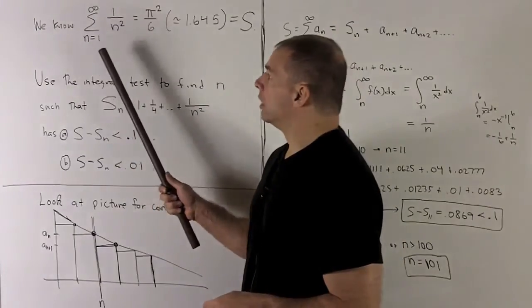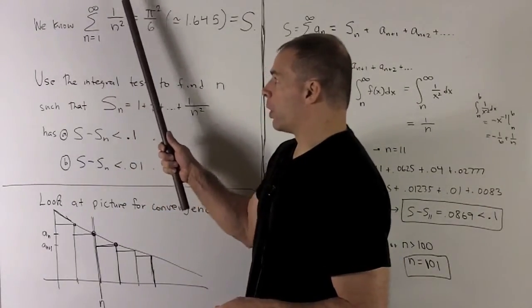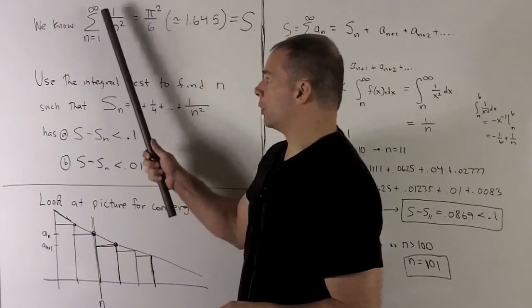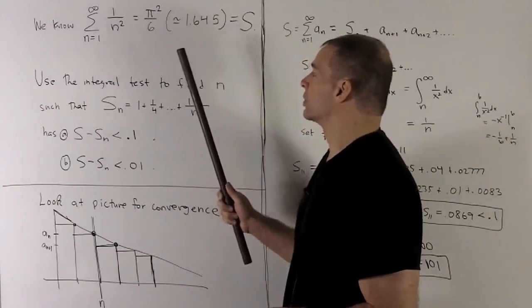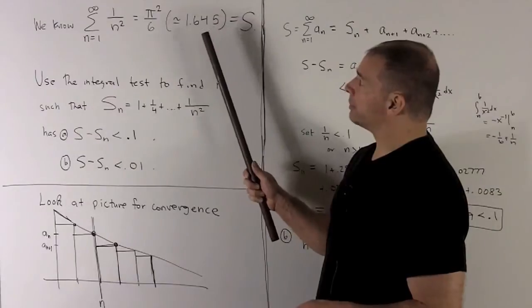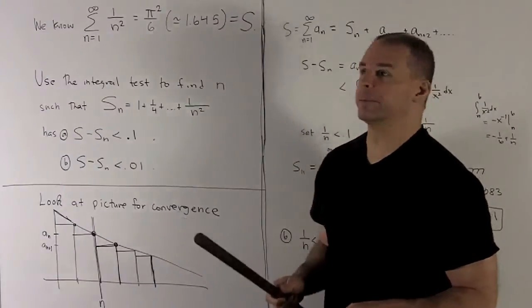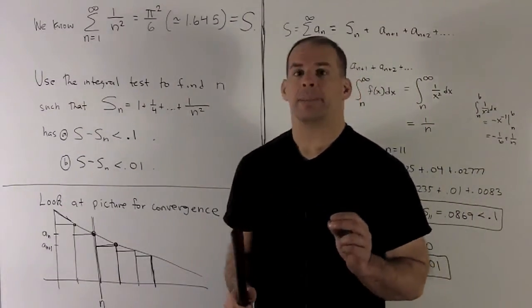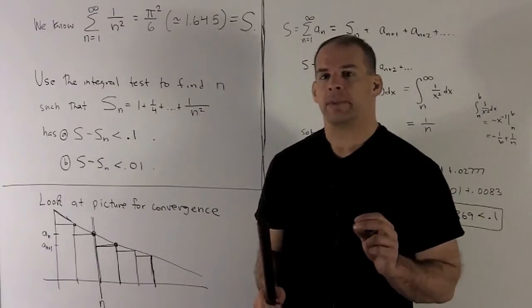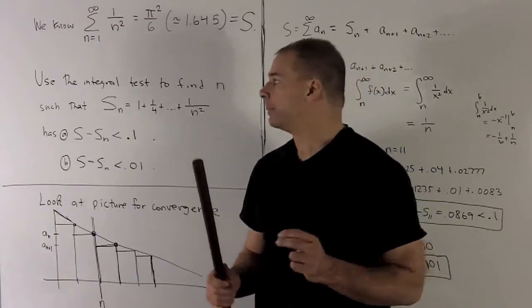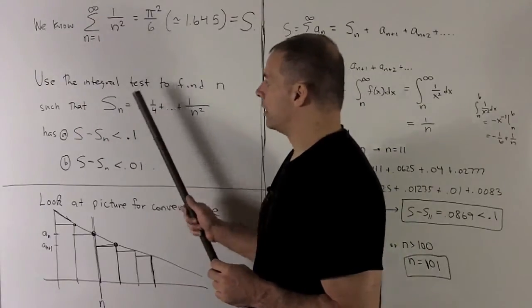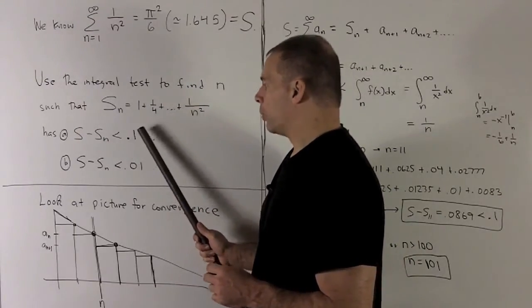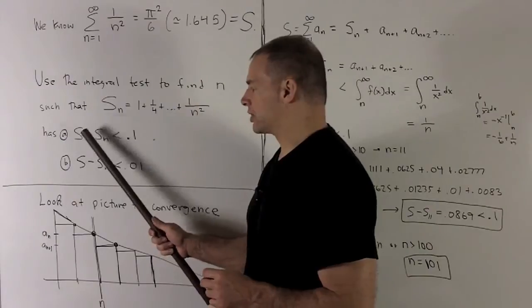Now, we know that the series for 1 over n squared, as n goes from 1 to infinity, will have as its sum pi squared over 6, which is roughly 1.645. So suppose we didn't know that, but suppose I wanted to know how could I find a partial sum that comes within 0.1 of the sum of the series?